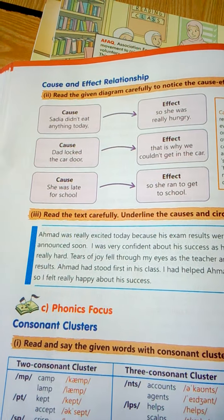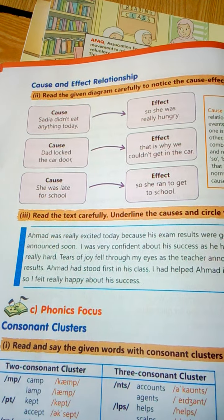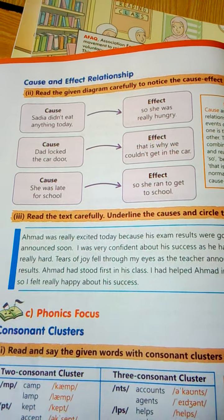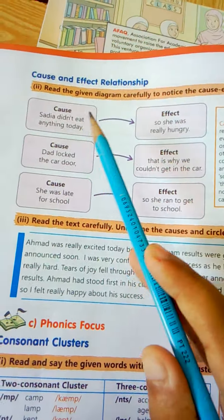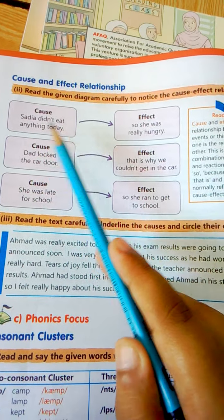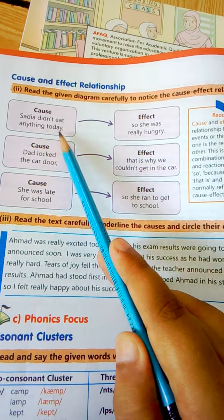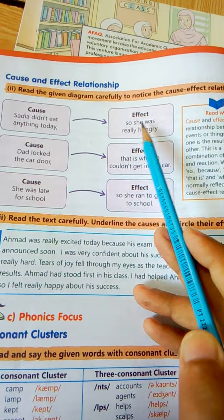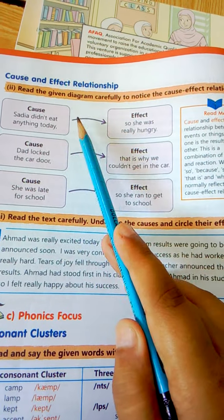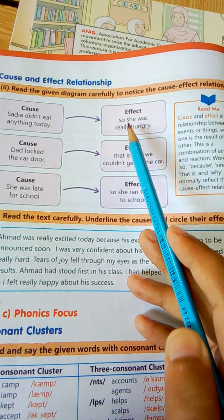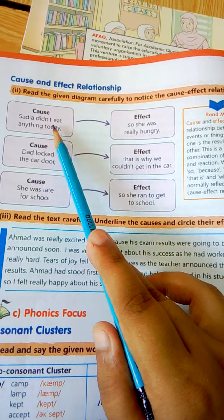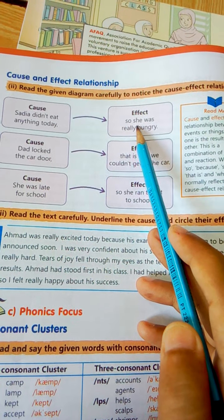ایک وجہ ہوتی ہے اور ایک اس کا افیکٹ ہوتی ہے — اس کے اثرات۔ جیسے یہاں: cause — Sadhya didn't eat anything today, so she was really hungry. اس نے کچھ نہیں کھایا تھا، اس لیے وہ بھوکی تھی۔ وجہ کیا تھی کہ اس نے کھانا نہیں کھایا، اور effect یہ ہوا کہ وہ بھوکی تھی۔